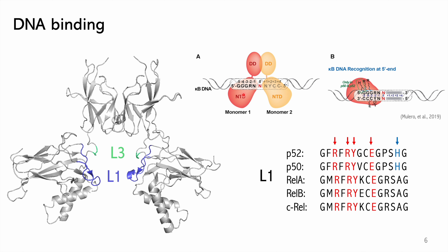Therefore, the consensus is pseudosymmetric, which means it reads the same from the other strand in the reverse direction. Two loops are used to bind to the DNA, but more sequence recognition is done by L1. Arginine can recognize two G's at the third and fourth positions. C on the opposite strand at the third position is recognized by glutamic acid, and any pyrimidine at the second position can be bound by tyrosine.